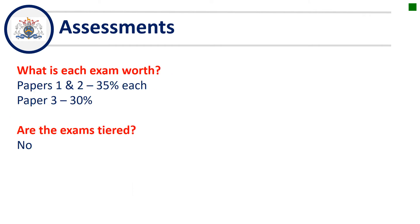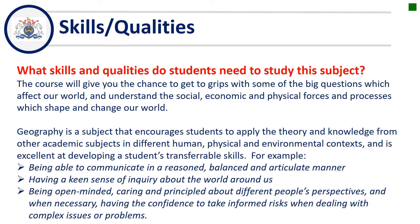What are these exams worth? Papers one and two are worth slightly more — 35 percent each. Paper three is 30 percent. Are the exams tiered? No, there is no higher or foundation tier. It's all the same.